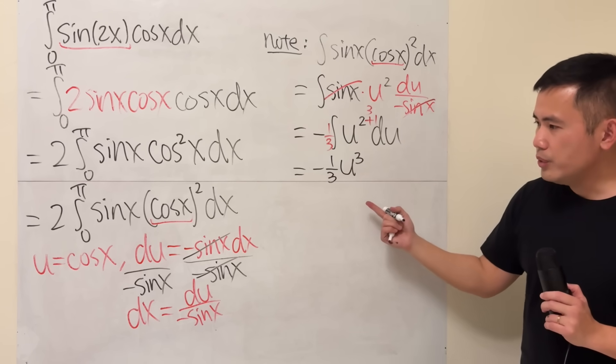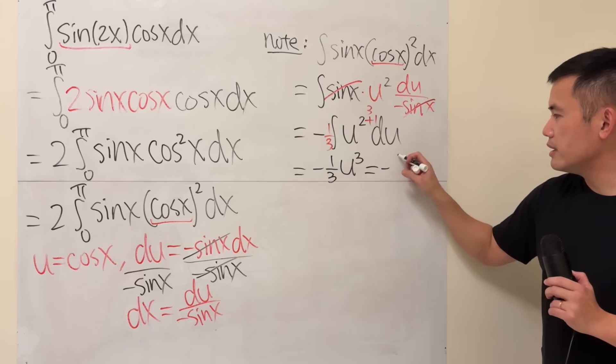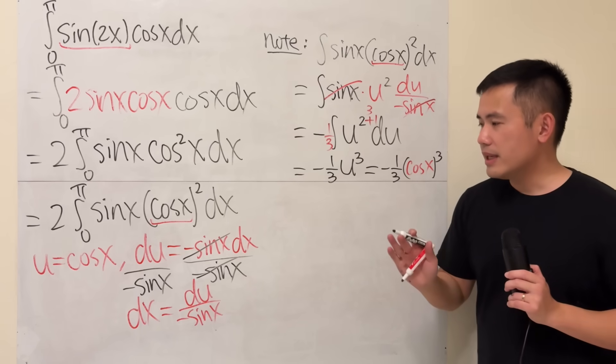But what's u, though? u is equal to cosine x. So this is just negative 1 third, and then let's write cosine x, and then to the third power. Alright, that's just this indefinite integral part.